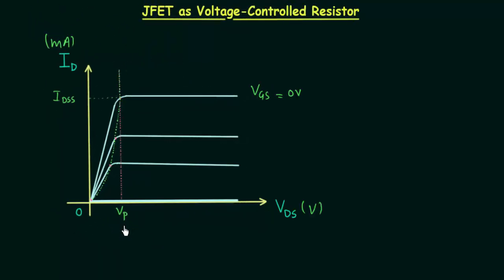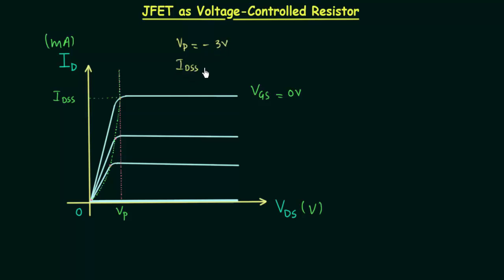IDSS and VP are already given for the JFET. Let's say IDSS is equal to 6 milliamps and VP is equal to minus 3 volts.